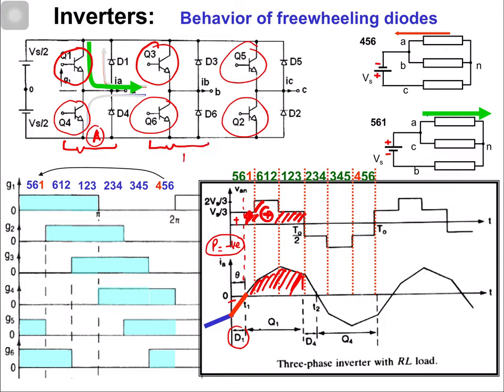This explanation for phase A is applicable for phases B and C as well. The current waveform is at a certain angle theta with respect to voltage and can be represented in terms of harmonic components by dividing the phase voltage waveform by the impedance to get the phase current.